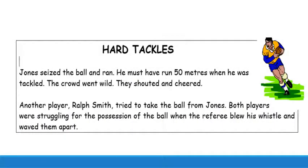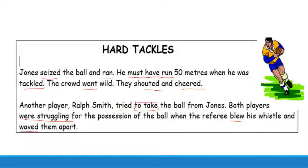If we look at this paragraph over here, do you think you can identify some of the verbs? Let's look at them together. Jones seized the ball and ran. He must have run 50 metres when he was tackled. The crowd went wild. They shouted and cheered. Another player, Ralph Smith, tried to take the ball from Jones. Both players were struggling for the possession of the ball when the referee blew his whistle and waved them apart. So you might see that some words are a little bit of a weird one. Are they both verbs, or one verb together? These are some of the questions we'll answer as we go through this video.